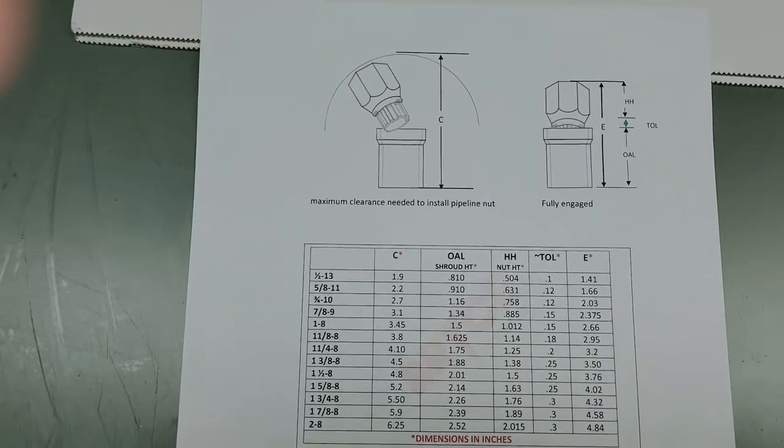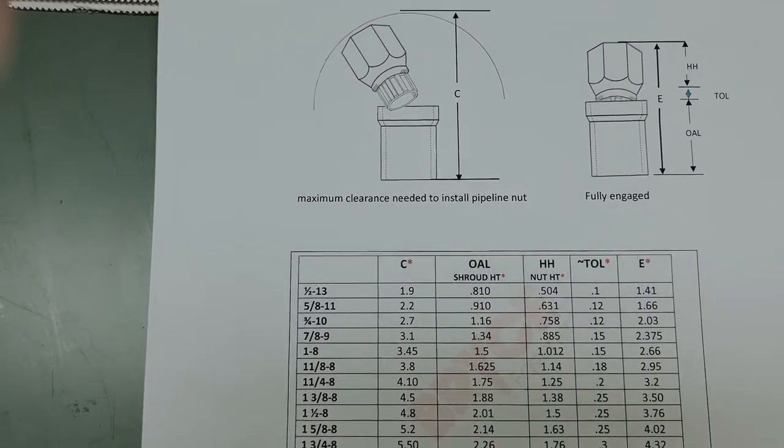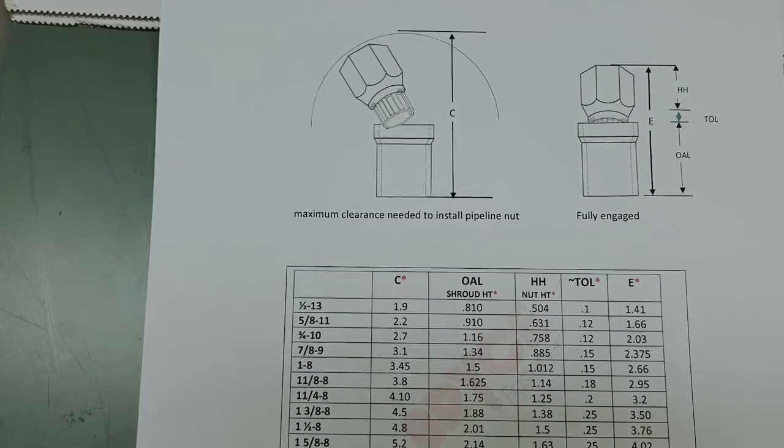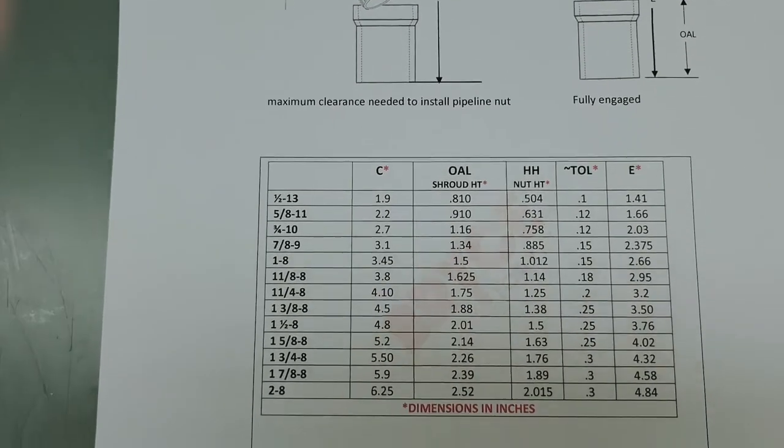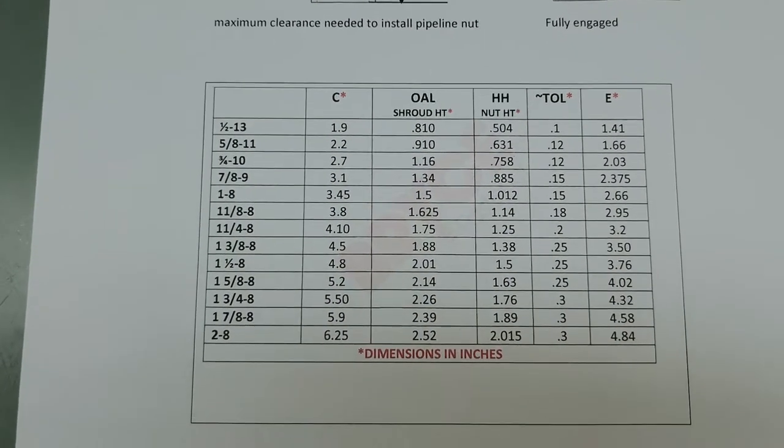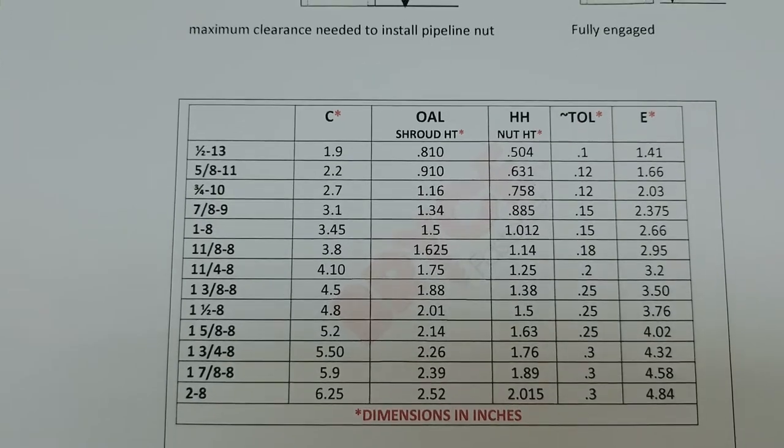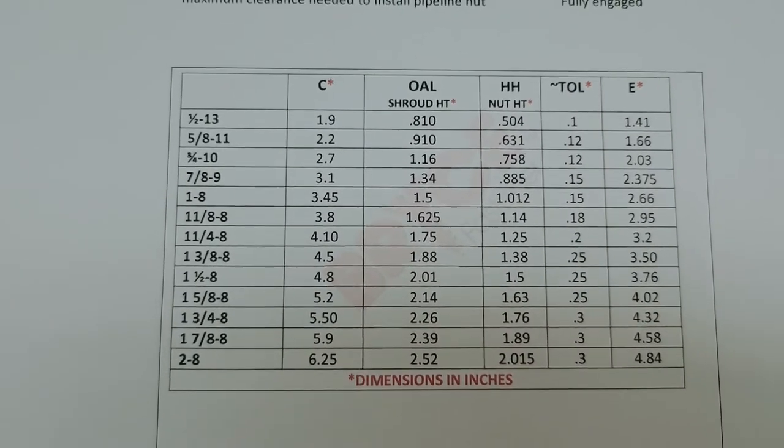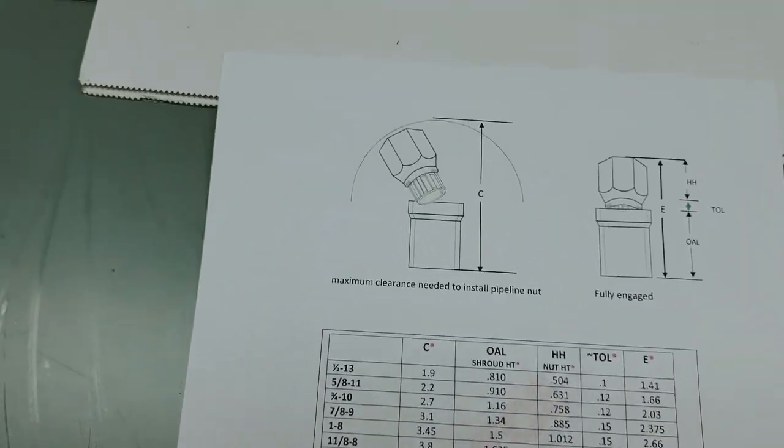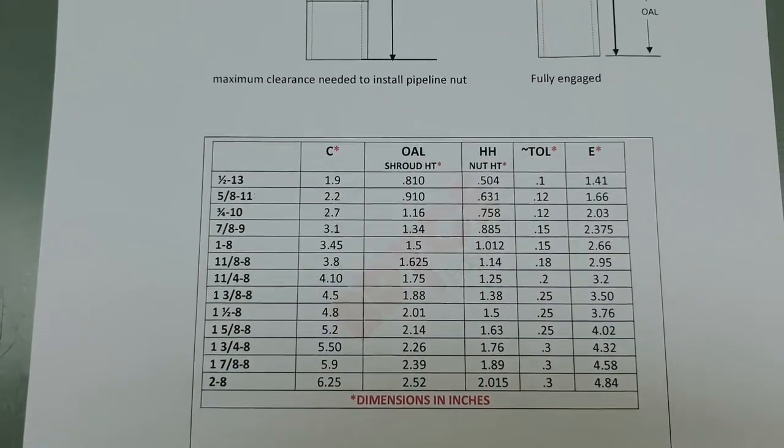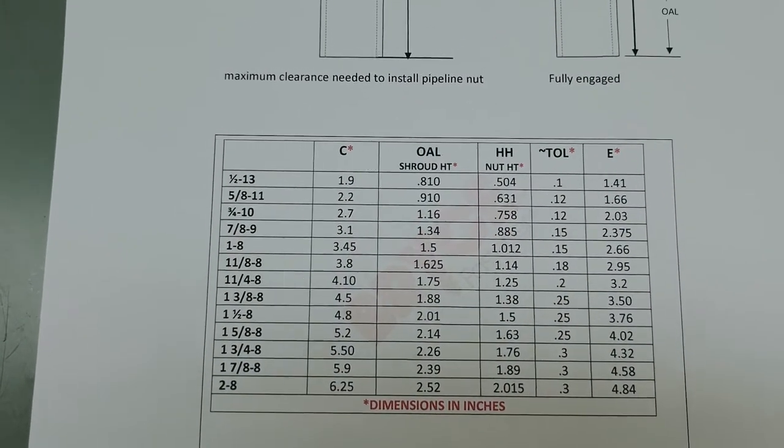We did have a situation where somebody was concerned about clearance because in some of these wellhead situations, you don't have much clearance. So we actually have a printout that tells you what kind of clearance you have, and obviously you have to have at least that in order to be able to put the nut in place. It'll roll in there and you may want to put the nut someplace where you don't have any clearance issues.